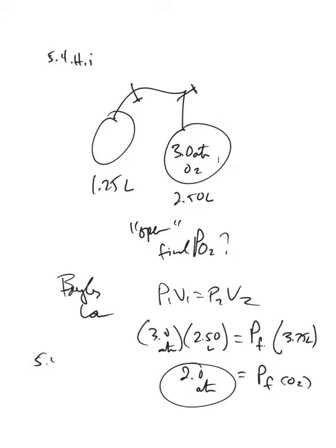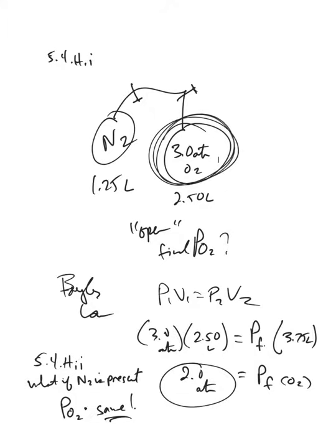And, question 5.4.h.ii is What if N2 is present? What's the final pressure of the oxygen? And it's basically going to be the same. Basically, if I start off with some N2 in here, that's got no effect at all on the oxygen. All the oxygen cares about is it gets to bounce around inside a new flask.